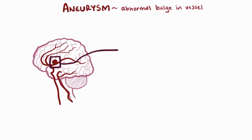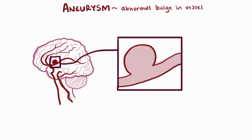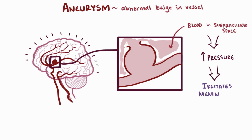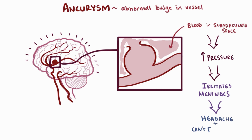If an aneurysm ruptures in the brain, blood will pool into the subarachnoid space, putting pressure on brain tissue and irritating the meninges, causing symptoms like a very sudden and intense headache and the inability to flex the neck forward.